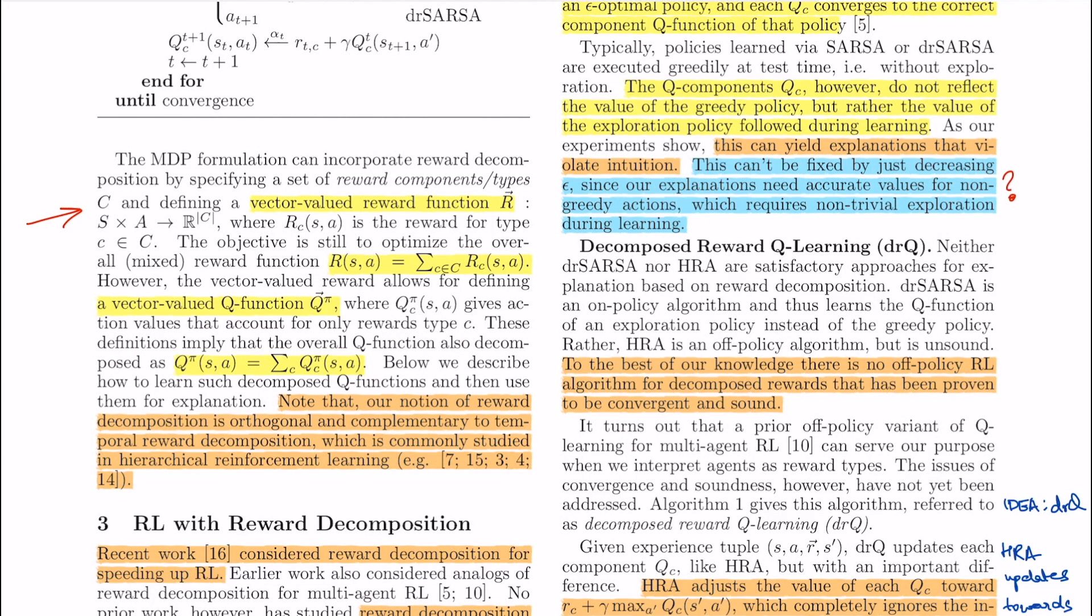Here they show that this reward function is actually a vector where each index is the corresponding reward component. The total reward is the sum of these individual components and the final Q value is also the sum of the individual component Q values as I just mentioned.